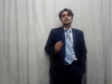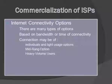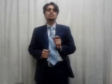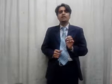After discussing the different types of internet service providers, let's discuss connectivity options. Connectivity options means the options which an individual or an organization has to connect to the internet. These options are based on bandwidth or time of usage. Number one is the individual and light usage option. This option is basically for an individual or a group of individuals who do not want high volume or high bandwidth. It is very low in cost and one can easily get this package.